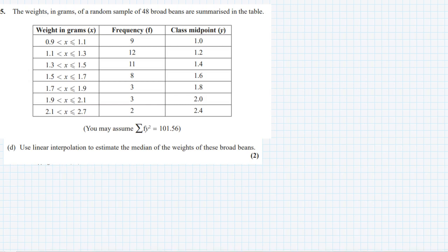We have to find the median. So first let me write the cumulative frequency and find where the mid value occurs. We have 9, and 9 plus 12 that is 21, plus 11 is 32, plus 8 is 40, plus 3 is 43, plus 3 is 46, and plus 2 is 48.